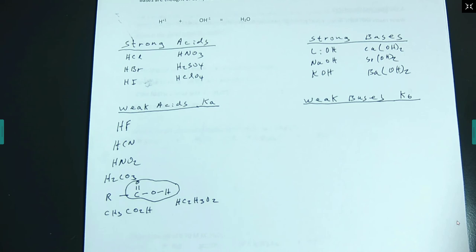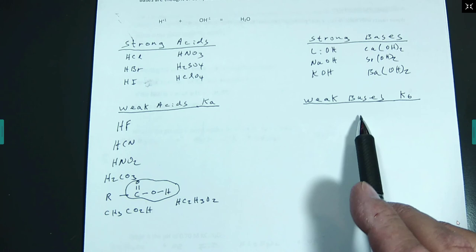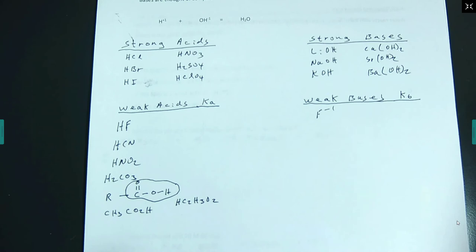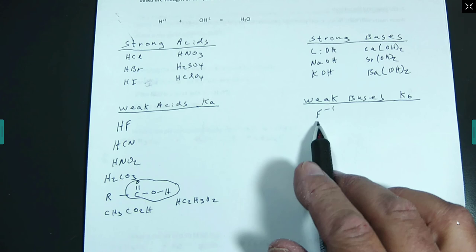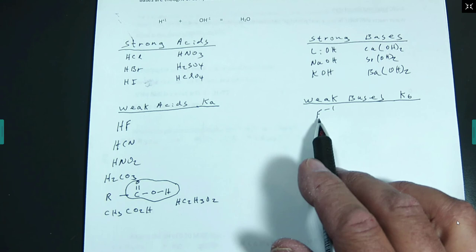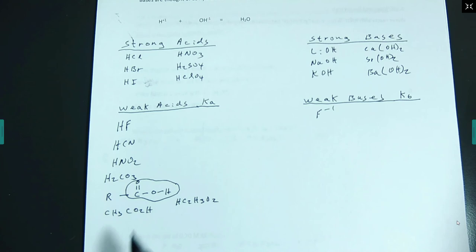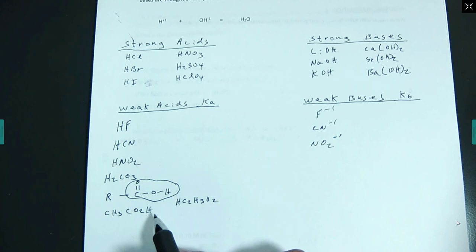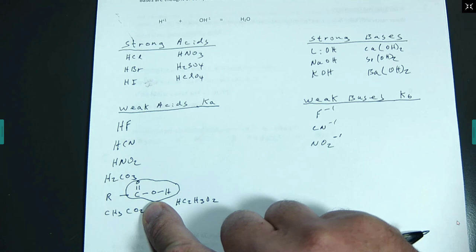If you're a weak acid, your conjugate is a weak base. To make a conjugate, simply remove one hydrogen. So if I take HF and remove the hydrogen, I get fluoride ion — and fluoride ion in solution is a little bit basic; it will react with water and produce hydroxide ions. Similarly, acetic acid's conjugate base is acetate ion — a weak base. Nitrous acid's conjugate base is nitrite ion. Any carboxylic acid — take away the acidic hydrogen and you have a weak base.